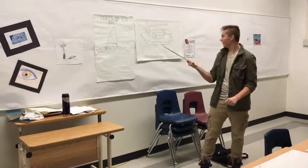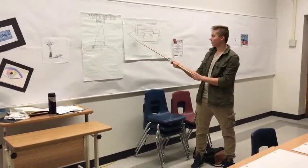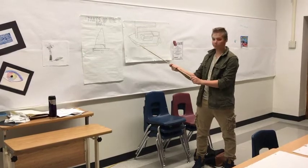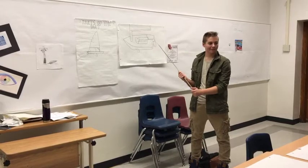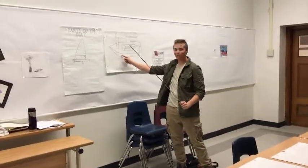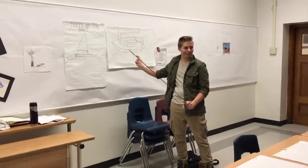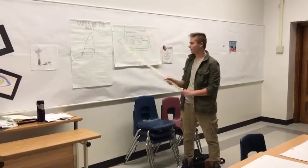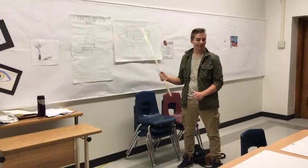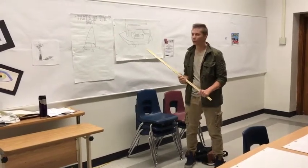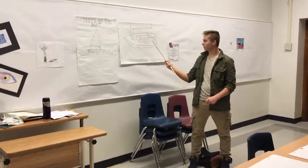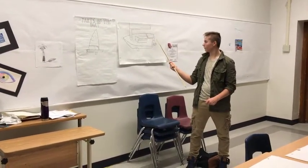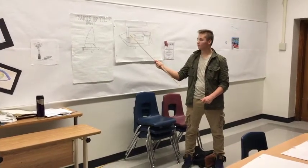Next, the parts on the boat itself. This here is called the hull of the boat — it just means the boat itself. On your hull, there are a few terms you need to know: dagger board, hiking strap, tiller, tiller extension, rudder, and mast. We're going to start with the dagger board.